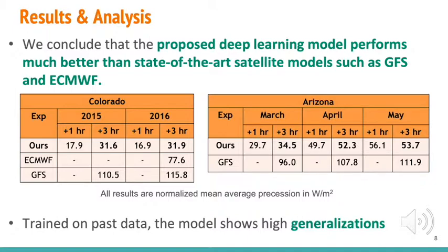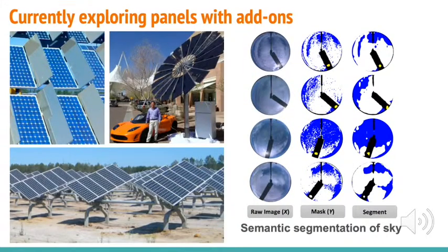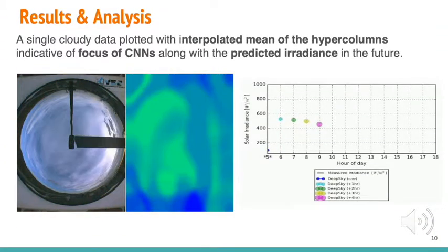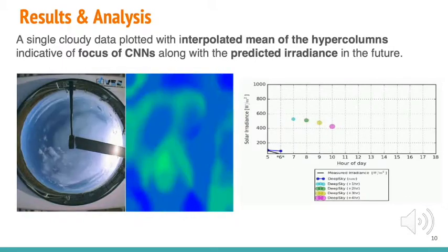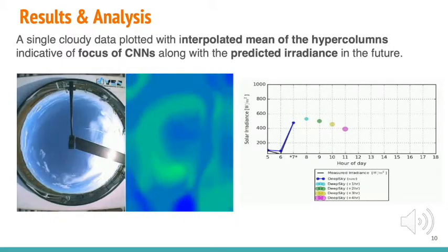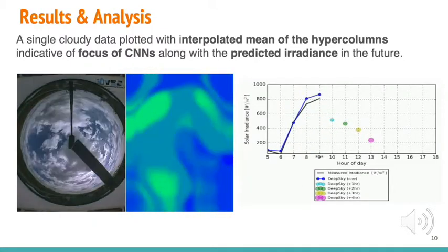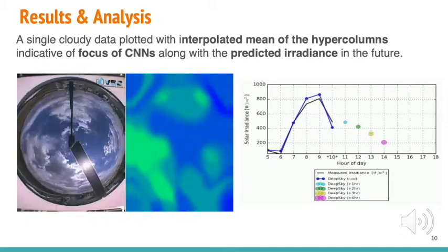We are currently working on using this technology to enhance photonic harvesting for solar panels with special add-ons. We are also looking at semantic segmentation of the sky region as seen in the images on the right. The animation to your left shows the interpolated means of hypercolumns, which are indicative of the focus of the convolution filters. The graph on the right shows that the model is able to successfully predict a dip in power production ahead of time on a particularly cloudy day.